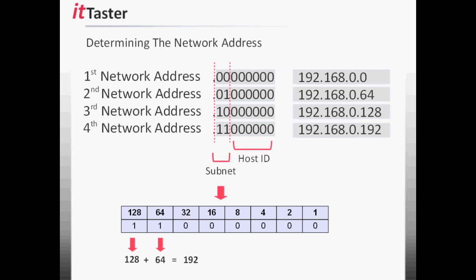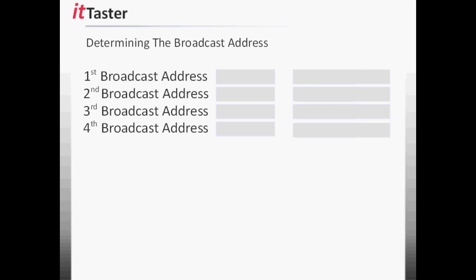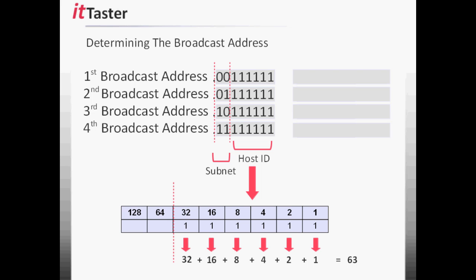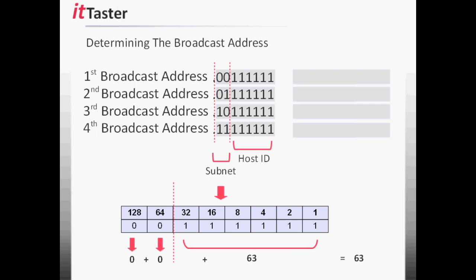Now that we've established the network address of each subnet, the next thing I'm going to do is determine the broadcast address of each subnet. An IP address with all of the host bits set to 1 is the broadcast address. To determine the broadcast address for each of the 4 subnets, I'm going to set all of the host bits to 1. If the 6 host bits are transferred to a binary table and the values are added, we arrive at the decimal value of 63. For the first subnet: 0 plus 63 equals 63. The broadcast address for the first subnet is 192.168.0.63.